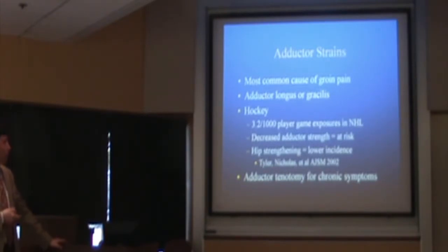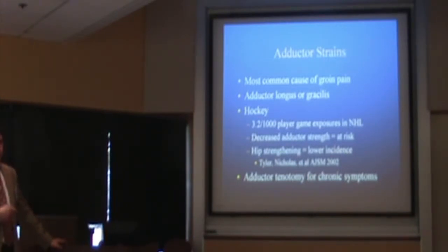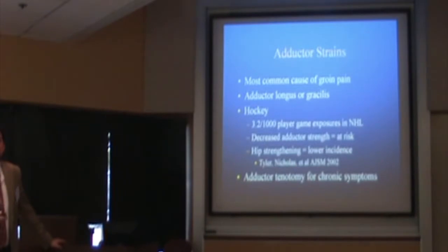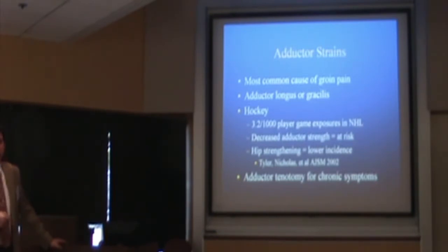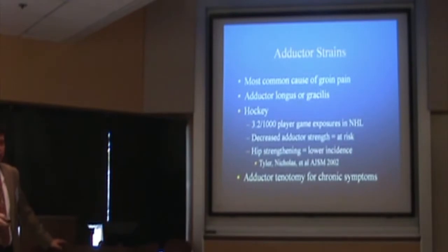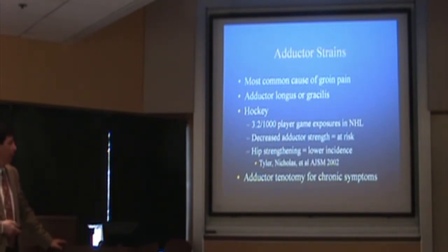In chronic adductor tendonitis cases, we do everything we can to avoid surgery — cortisone injections, working with trainers and therapists. In recalcitrant cases, an adductor tenotomy is the last-ditch effort and tends to be relatively successful. There was a paper by John Uribe on adductor longus repairs in NFL players suggesting repair of acute avulsions, but the general consensus is that if someone avulses their adductor longus tendon, you can probably let it heal conservatively.